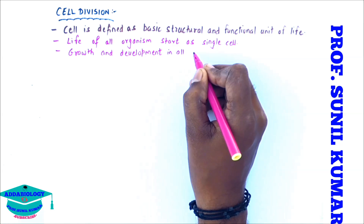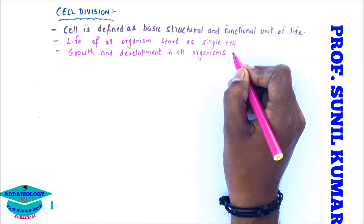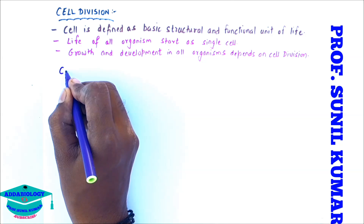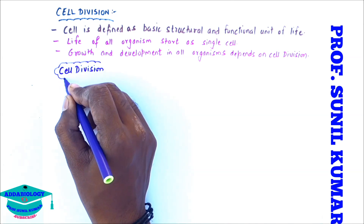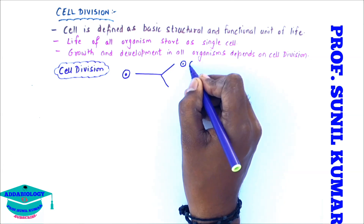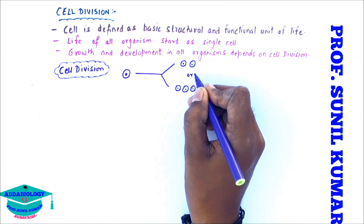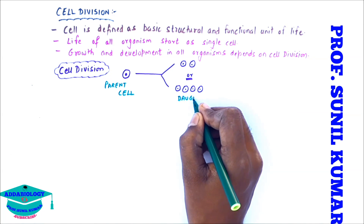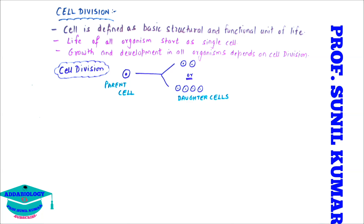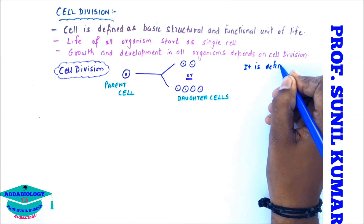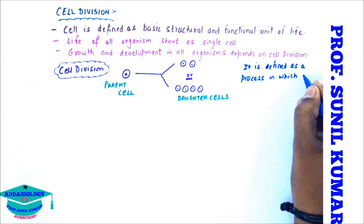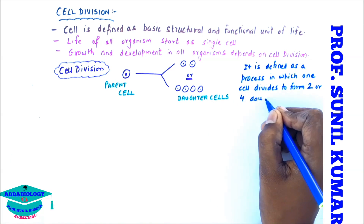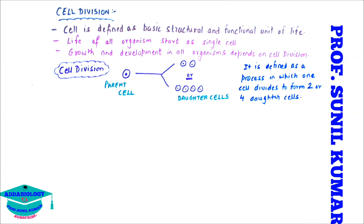Growth and development in all organisms purely depends on cell division. Now let us understand how to define cell division. When one cell divides to form two or four cells, that is called cell division. The cell which is dividing is called the parent cell, and the cells which are formed are called daughter cells.